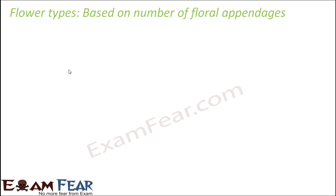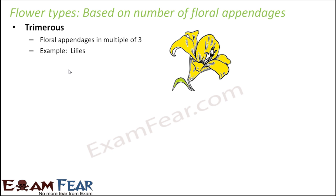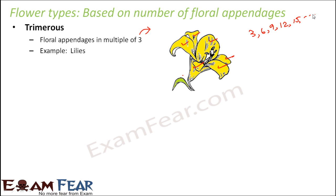We can also look at flower types based on the number of floral appendages — meaning the number of petals. Flowers whose floral appendages are in multiples of three are called trimerous — 'tri' means three. For example, a lily has six petals, and six is a multiple of three. Multiples of three include three, six, nine, twelve, and so on.